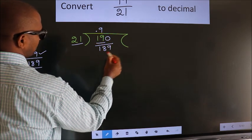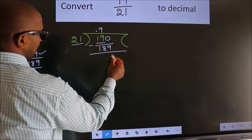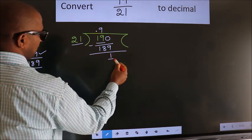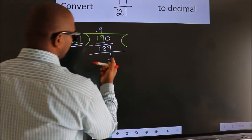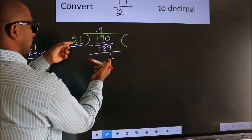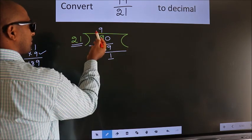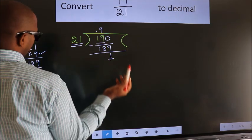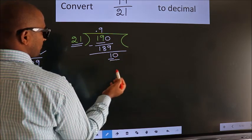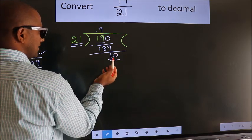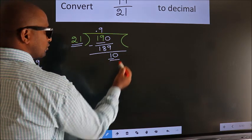189. Now we subtract and get 1. Here we have 1, and 21 — 1 is smaller than 21. We already have the decimal, so we can directly take 0, giving us 10. But 10 is still smaller than 21.